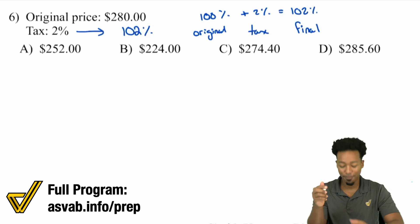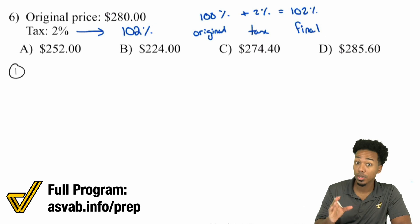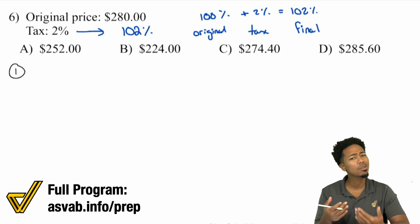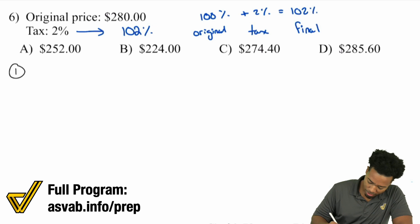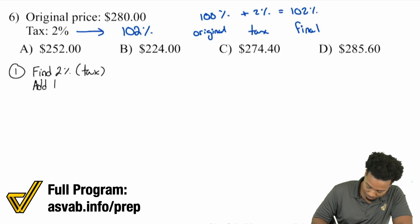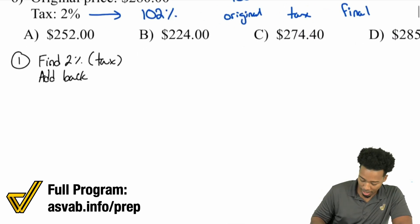Method number one — I really need you to follow both methods entirely because you'll be able to pick which is more convenient depending on the numbers. Method one: I'm going to find the 2% tax first and then add it back. For taxes, this might be easier because you're dealing with fewer digits.